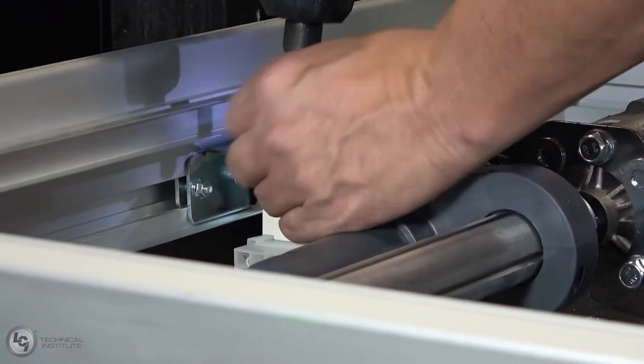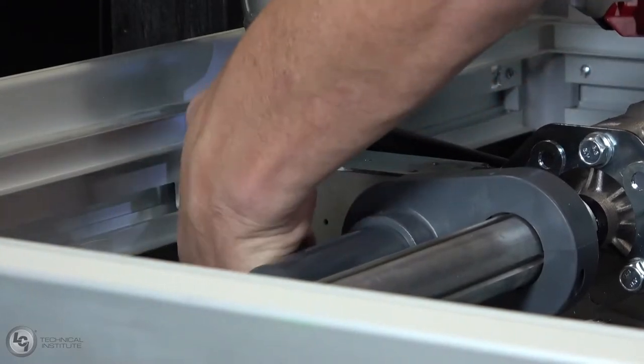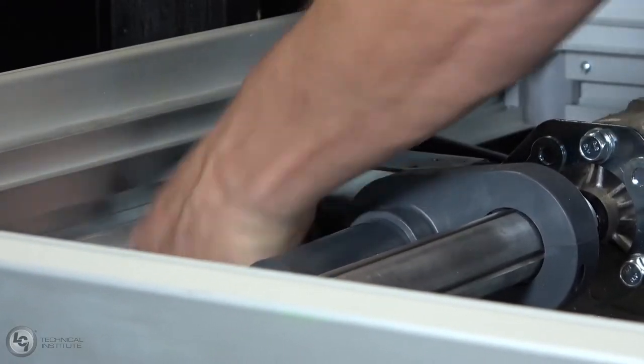Now we will need to remove the two screws holding the ACS in place. This will give us access to the bracket behind it.